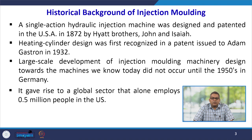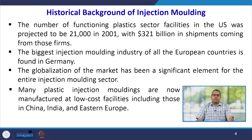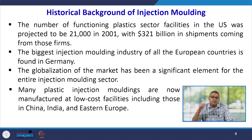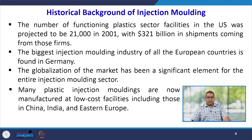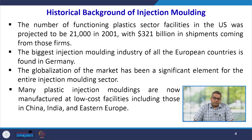This gave rise to a global sector that alone employs about 0.5 million people in the United States. The number of functioning plastic sector facilities is increasing day by day because of the advent of new products and development of new polymers. The biggest injection moulding industry among all European countries is found in Germany, although India is not far behind — we have a large number of injection moulding machines across the country. Many plastic injection mouldings are manufactured at low-cost facilities in India, China, and Eastern Europe, particularly in Gujarat and parts of southern India under the Make in India mission.